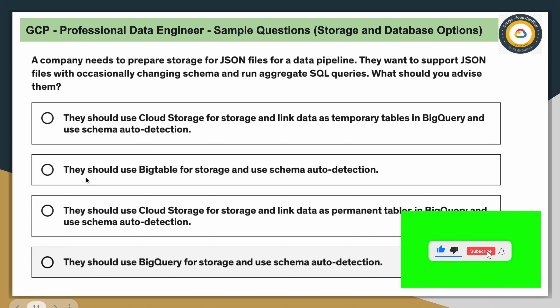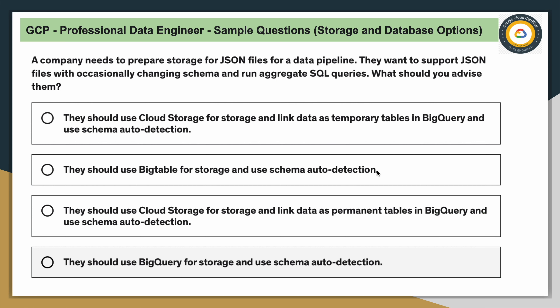Option two: use BigTable for storage with schema auto-detect. You can simply ignore this — BigTable is a NoSQL database and does not support SQL queries. Option three: use Cloud Storage for storage and link the data as a permanent table in BigQuery. This is not a valid feature — you can only create an external table on top of Cloud Storage data in BigQuery, not a permanent linked table. Ignore this option.